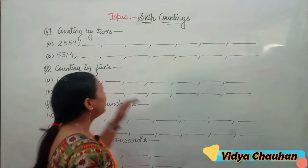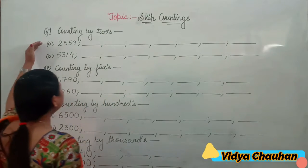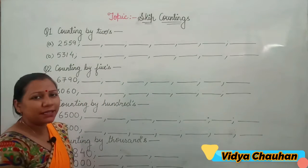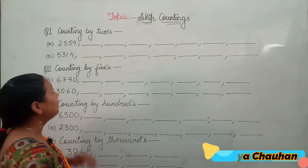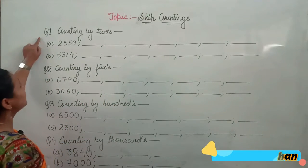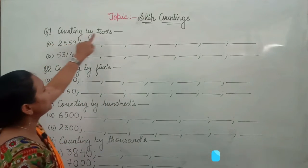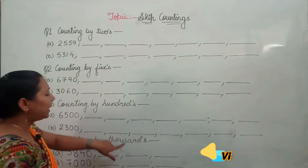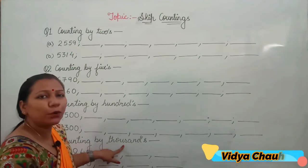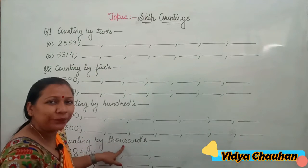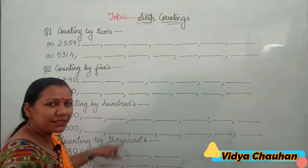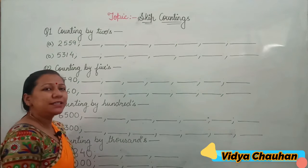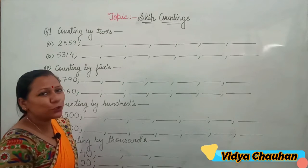I have taken some questions from your book exercise today, in which we will discuss skip counting by twos, by fives, by hundreds, and by thousands. So let us begin and learn how to solve these questions.